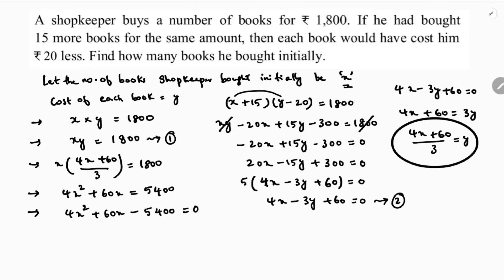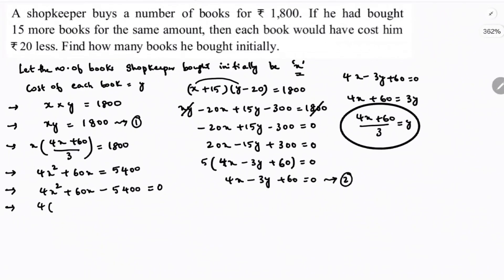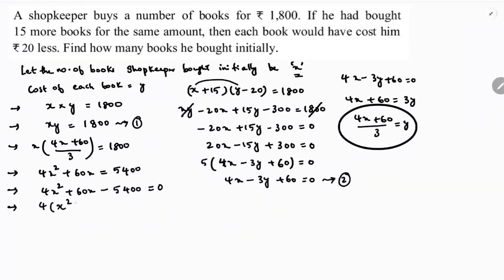Expanding and rearranging: 4x² + 60x - 5400 = 0. Taking 4 common from all terms and dividing through, we get x² + 15x - 1350 = 0. Now we need to factorize this quadratic.